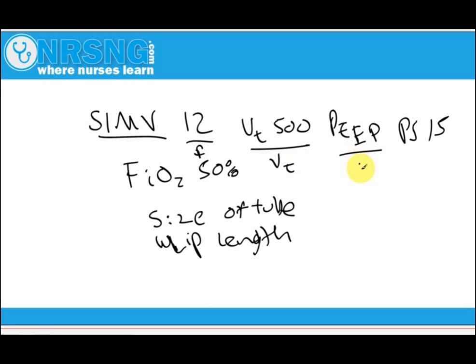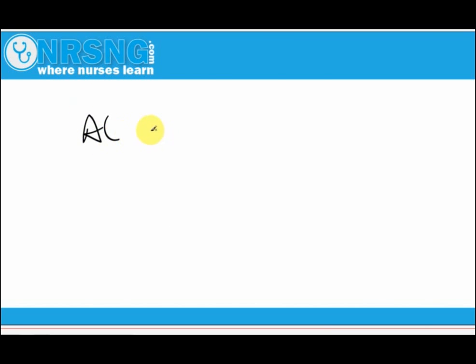If they're on assist control, that might look like: AC, rate of 15, tidal volume 500. Those are the settings you would tell somebody.